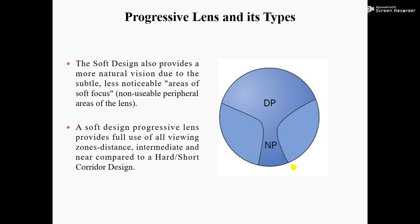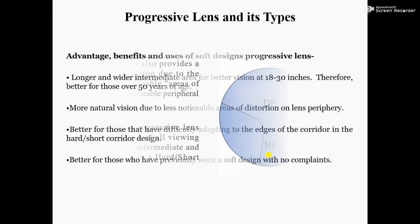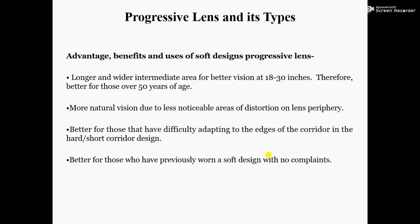The soft design progressive lens provides full use of all viewing zones — distance, intermediate, and near — compared to the hard oblique short corridor design progressive lens.